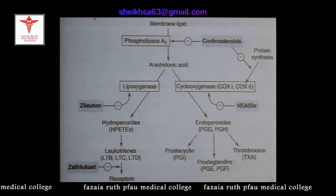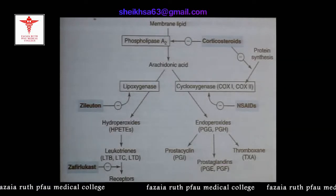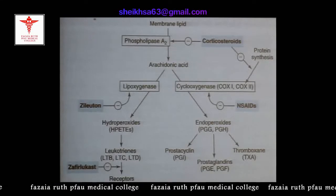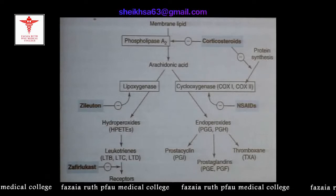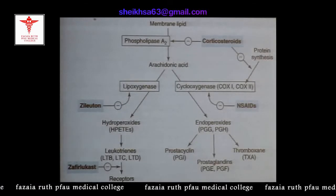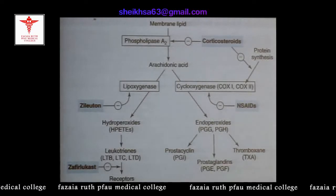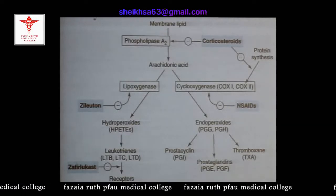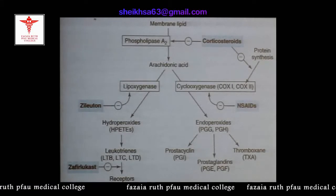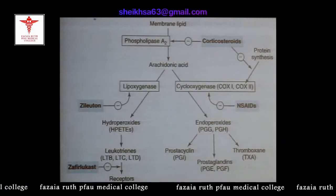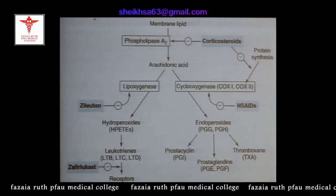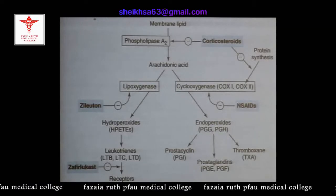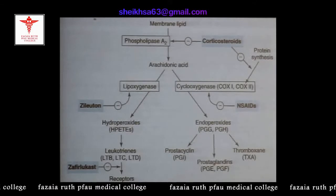The enzyme responsible for conversion of arachidonic acid into leukotrienes is 5-lipoxygenase. Leukotrienes are powerful bronchoconstrictors. They include leukotriene C4, leukotriene D4, and leukotriene E4. These leukotrienes produce bronchial hyper-reactivity, increase mucosal edema, and increase mucosal secretions.